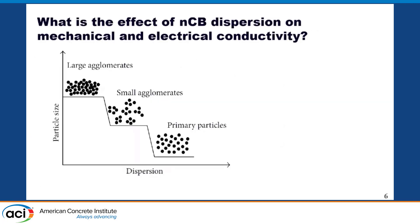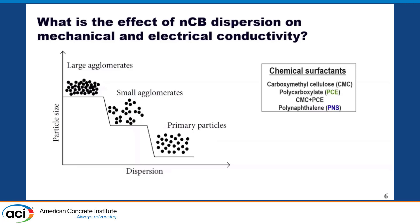The question is: carbon black is a super-hydrophobic material with a tendency to agglomerate due to van der Waals forces, and it is a porous material. Meanwhile, the cement matrix is also a hydrophobic material. So the question arises: how can we enhance the dispersion of nano carbon black and move from large agglomerates to primary particles while keeping good electrical conductivity and good strength?